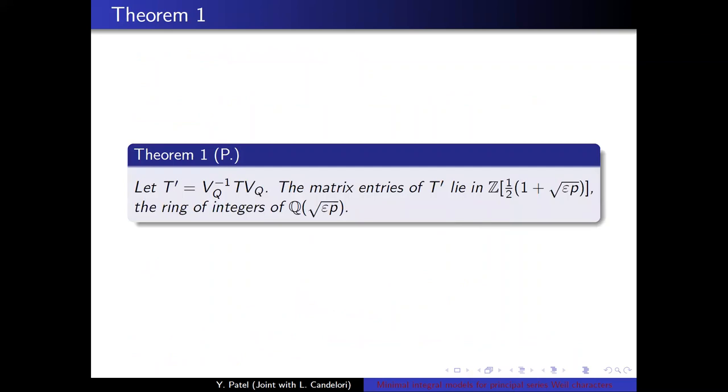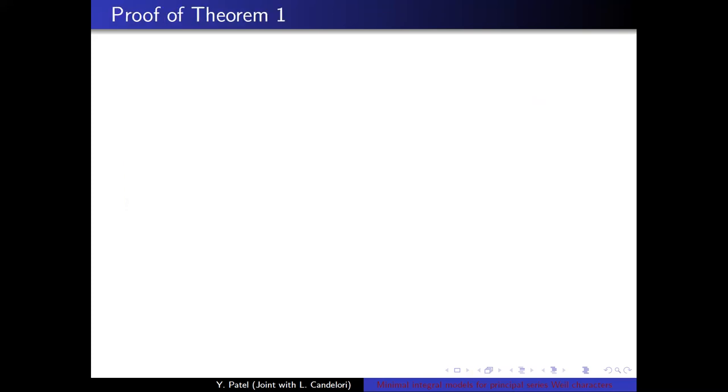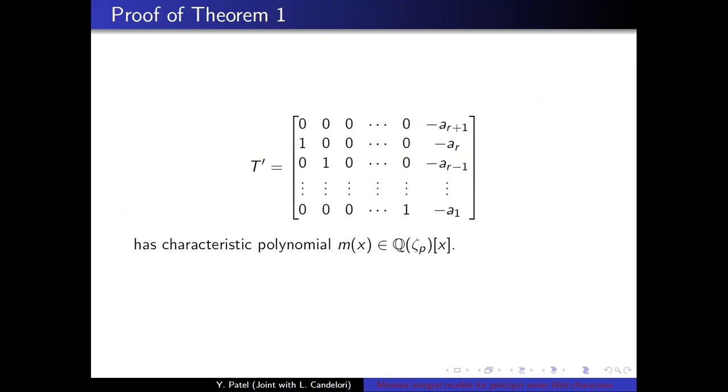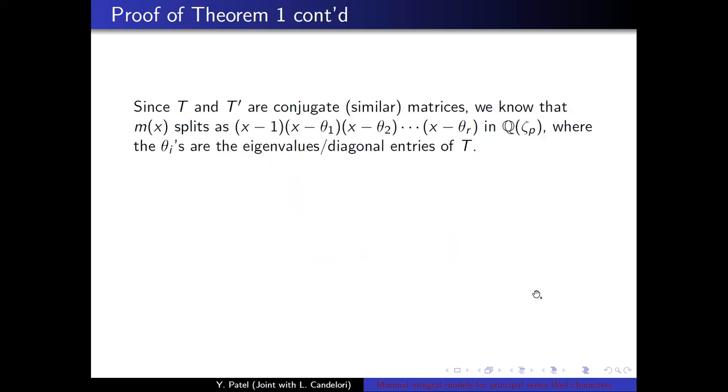And this looks very familiar to the entries in the character table. And it is clear that both these terms are always contained in the ring of integers Z adjoined with one-half times one plus the Gauss sum. So this leads to the first theorem. Let T prime be the change of basis of T, conjugation by the Vandermonde matrix VQ. Then the matrix entries of T lie in the minimal integral model that Ries conjectured or stated.